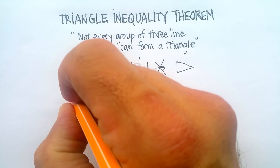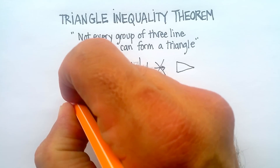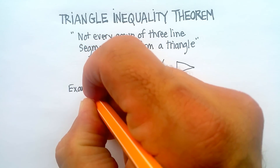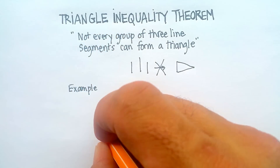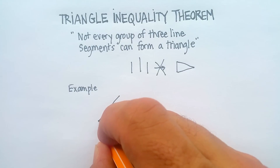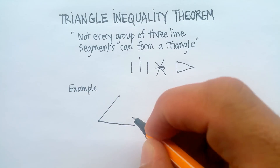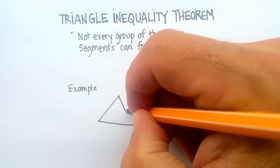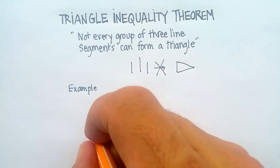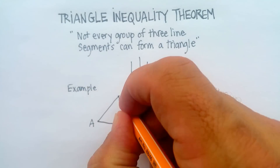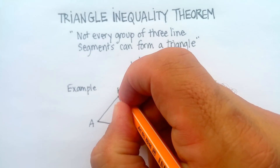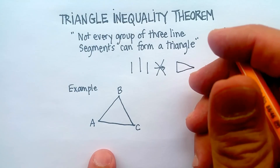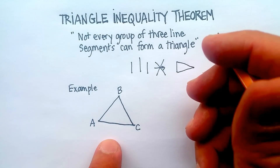To show you what that relationship is, let me do an example. Here's my example, and I'm going to call this a triangle. It can be any old triangle — doesn't have to be a right triangle or anything like that. We'll call this vertex A, we'll call that vertex B, and we'll call that vertex C.